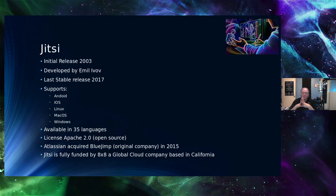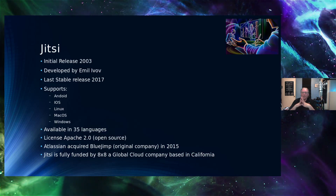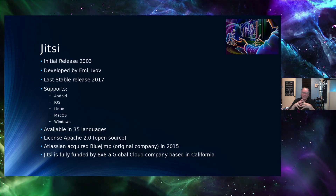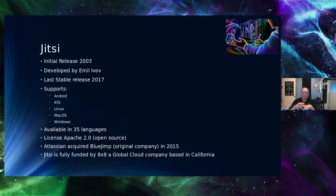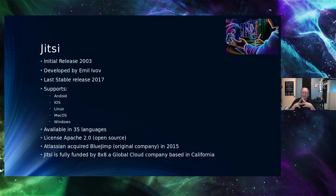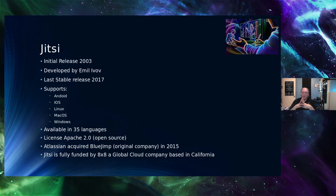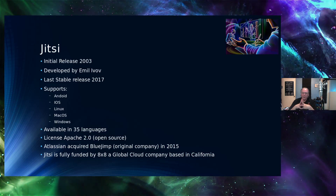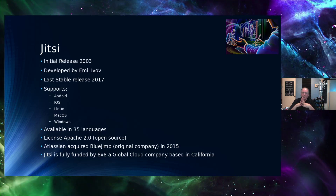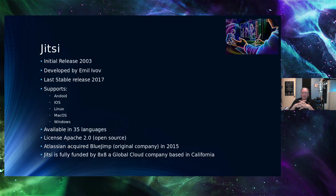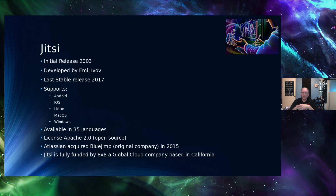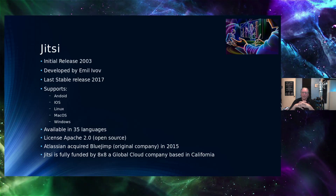Atlassian acquired Bluejimp, which was the founding company for Jitsi, in 2015. Unlike Zoom, Jitsi doesn't depend on ad revenue or selling your private data to fund itself. Instead, they have created a premium mode called Jitsi Meeting Pro for businesses, and that money is collected by 8x8 Global Cloud Company and turned back to fund Jitsi. The business side funds the free side — that's their monetization model, and so far it has apparently met 100% of their needs.